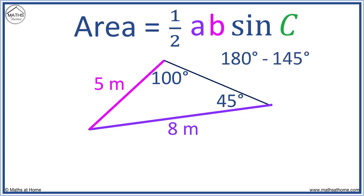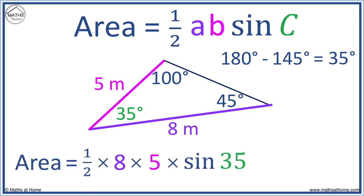180 minus 145 equals 35 degrees. Our missing angle C is 35 degrees. Now the area is 1/2 × 8 × 5 × sin 35. Working this out by calculator, we get an area of approximately 11.5 meters squared.